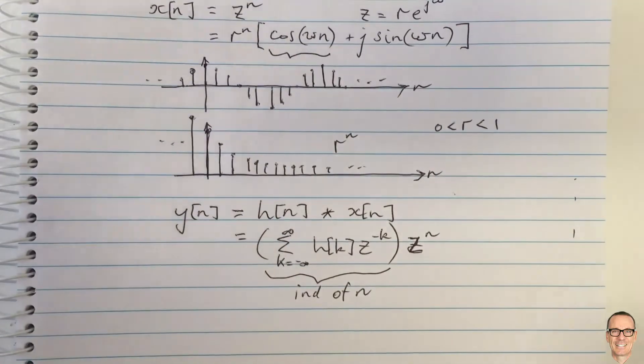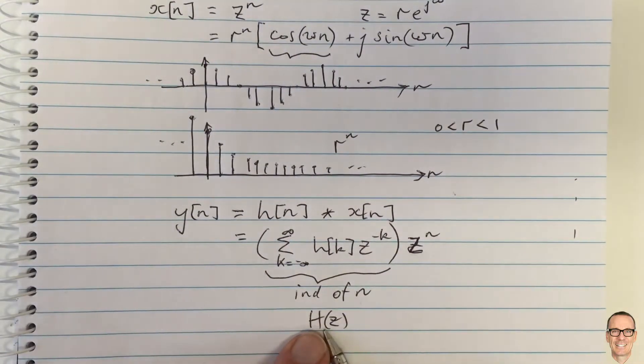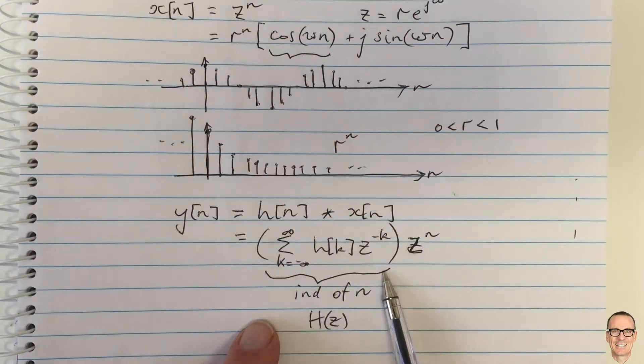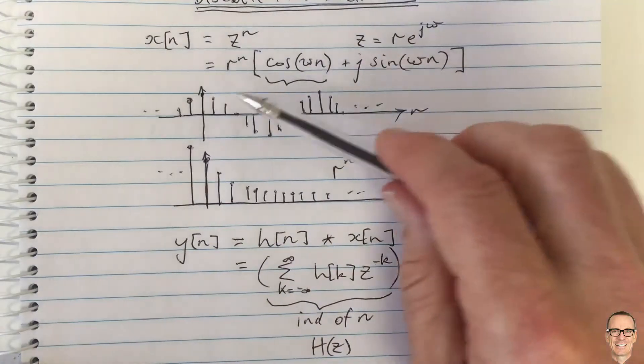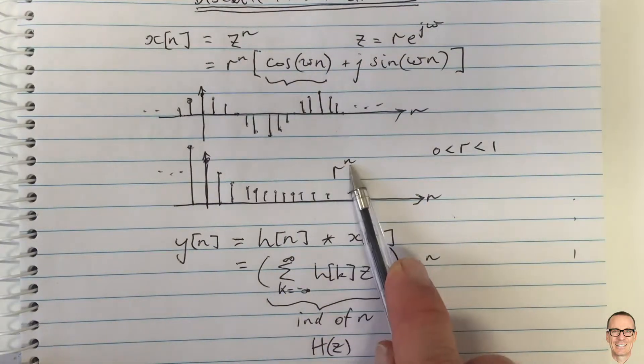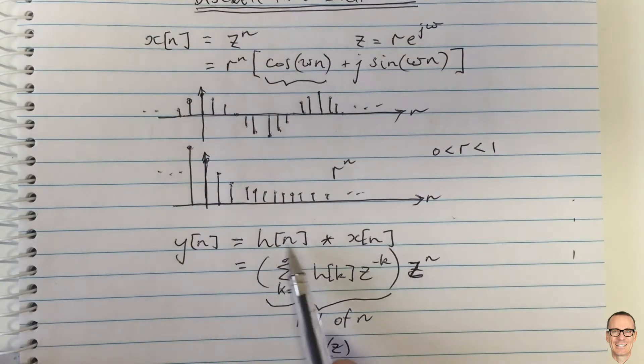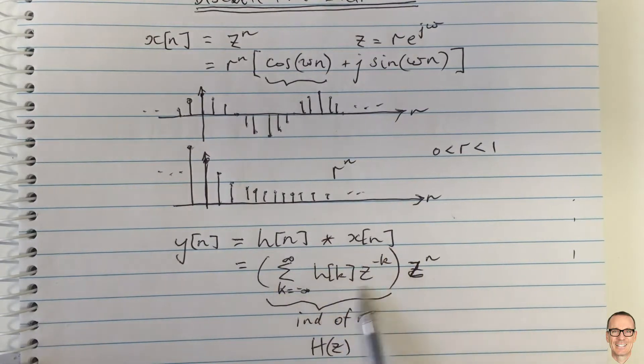This term we call the z-transform of the impulse response h, so we define this term to be the z-transform. Just as in continuous time, the cos waveforms (and weighted versions with r^n) are basis functions of linear systems. What that means is, if you put one into a linear system, it comes out maybe with its amplitude and phase changed, but not its frequency. This function H(z) is a function